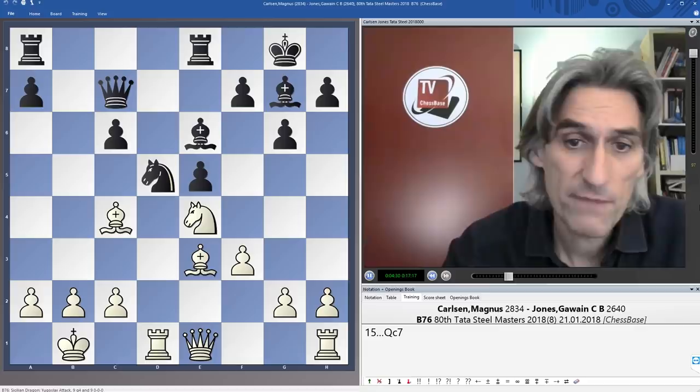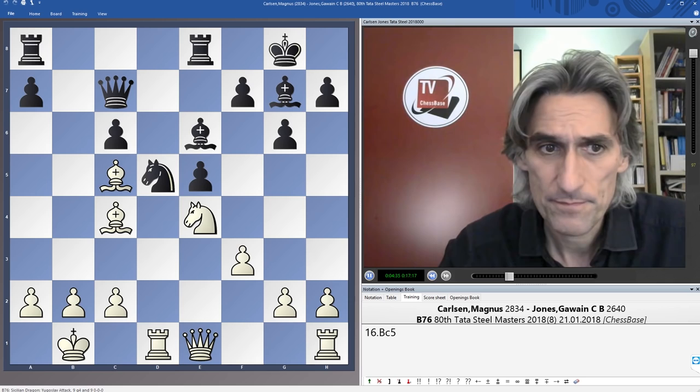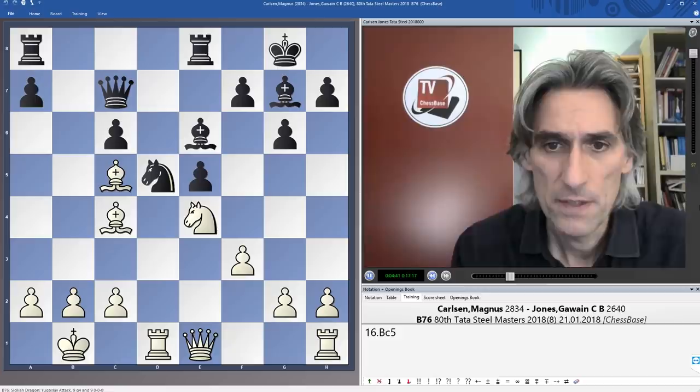And here, previously, queen c7 has been played. But bishop c5, it's rather typical for this variation. And white has, I think, positional trumps here.